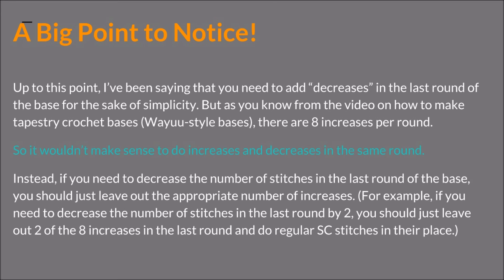Earlier I said that when I say decreases I actually mean something else, and this is a very important point — so please take note. Up to this point I've been saying you need to add decreases in the last round of the base for the sake of simplicity. But as you know from the video on how to make tapestry crochet bases — Y-style bases — there are 8 increases per round. It would not make any sense to do increases and decreases in the same round because they would cancel each other out. Instead, if you need to decrease the number of stitches in the last round of the base, you should just leave out the appropriate number of increases. For example, if you need to decrease the number of stitches by 2, just leave out 2 of the 8 increases in the last round and do regular single crochet stitches in their place.